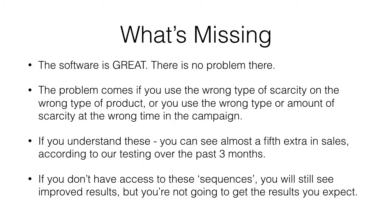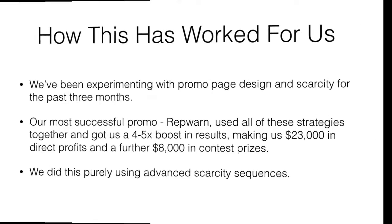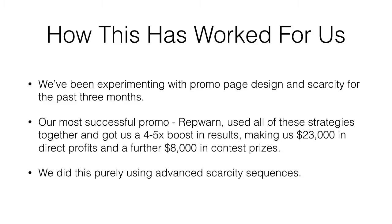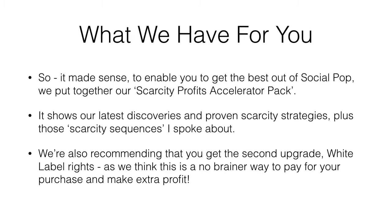We've been testing this over three months. If you don't have access to these sequences, you'll still see improved results, but unlike everybody else getting Social Pop, you're getting access to our accelerator pack — it's going to make a real difference. We launched a promo for a product called WrapWarn, a reputation management system from Walt Bayless. We used all the strategies with the sequences and got a four to five times boost on our normal results, making $23,000 in direct profits and a further $8,000 in contest prizes — over $30,000 in one month from four or five emails. Our scarcity profits accelerator pack shows our latest discoveries, proof, and scarcity strategies, plus those sequences.